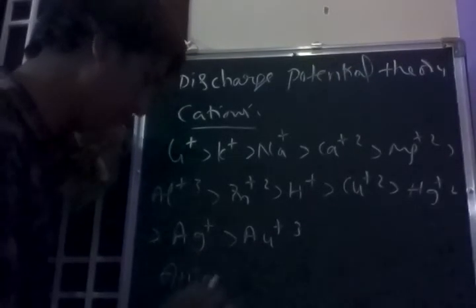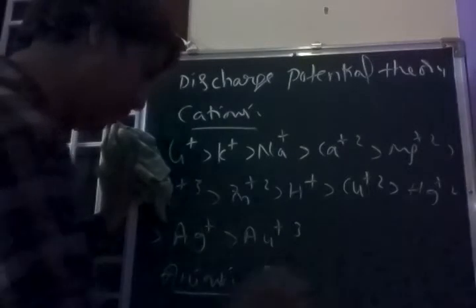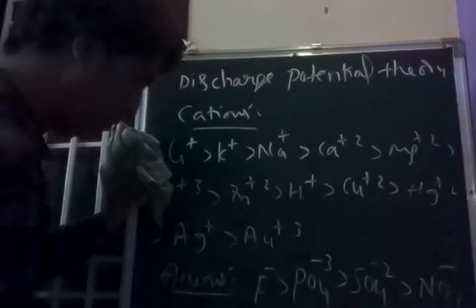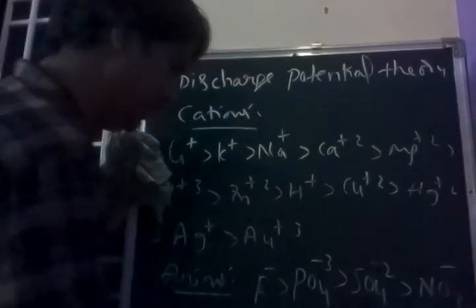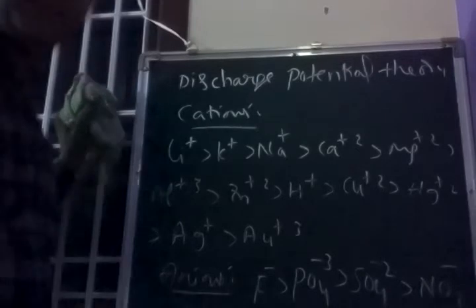The discharge potential order of anions is: F⁻ > Phosphate > Sulphate > Nitrate > OH⁻ > Cl⁻ > Br⁻ > I⁻. This is the discharge potential order of anions. It is useful when more than one type of ion is present.